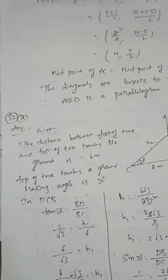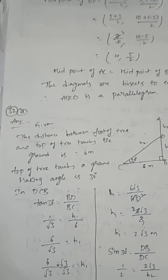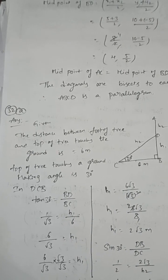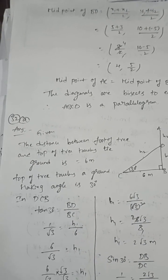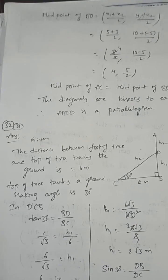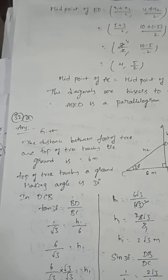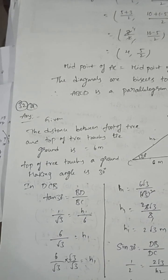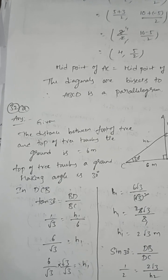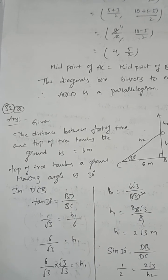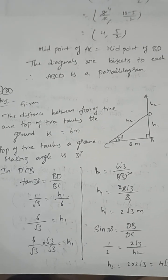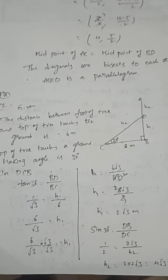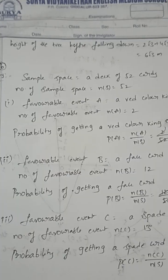A tree breaks due to a storm. The tree bends and touches the ground at an angle of elevation of 30° with the ground. The distance between the foot of the tree and where the top touches the ground is 6 meters. Find the height of the tree before the storm. That is H₁ + H₂. In triangle DCB, tan 30° = 1/√3 = H₁/6, so H₁ = 2√3. sin 30° gives H₂ = 4√3. Before the storm, height of tree is H₁ + H₂ = 2√3 + 4√3 = 6√3.